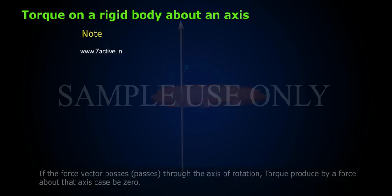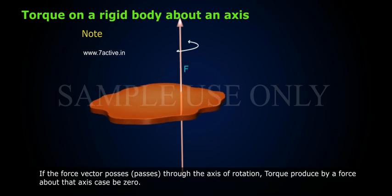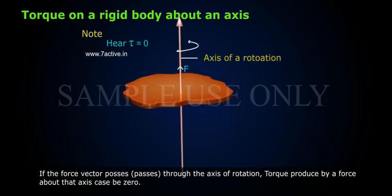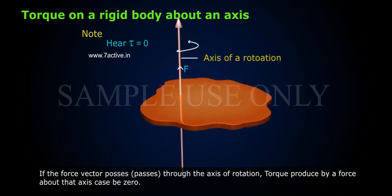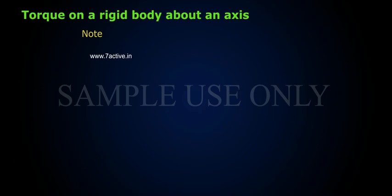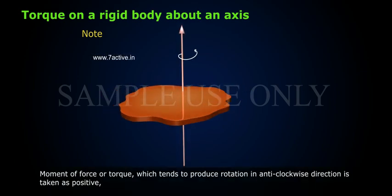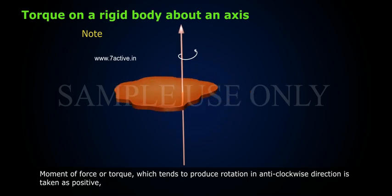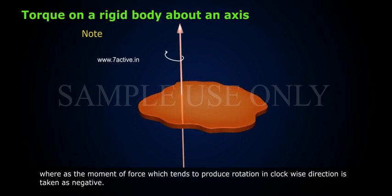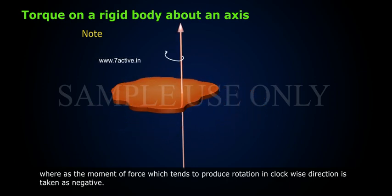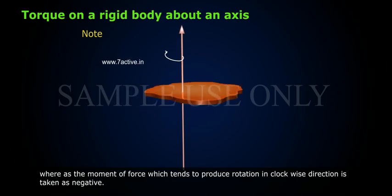Note: If the force vector passes through the axis of rotation, the torque produced by that force about that axis is zero. Note: The moment of force or torque which tends to produce rotation in the anticlockwise direction is taken as positive, whereas the moment of force which tends to produce rotation in the clockwise direction is taken as negative.